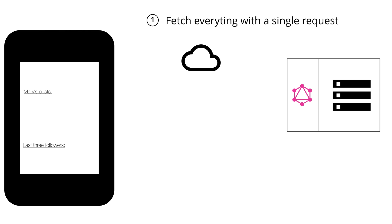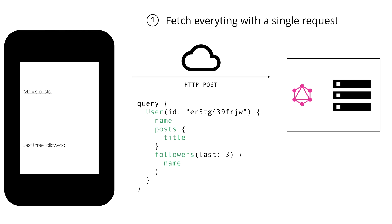The way this works is by sending a POST request to the server where, in the body of that request, you include a query that describes all the data requirements of the client. So in this case, we're asking for the user with a particular ID, and then we can specify all the data we want from that user — the name, the titles of the posts, and the names of the last three followers.